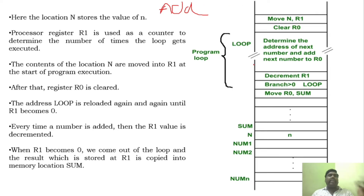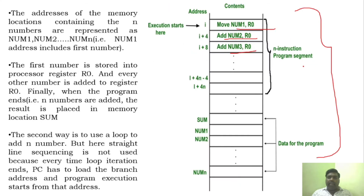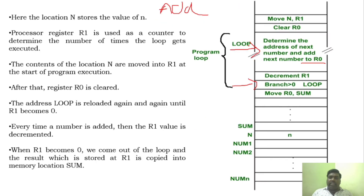Loop — where do you start, how do you start? You will add it and branch. This is the branch and this is the loop. A loop is nothing but determining the next address. I have to perform the same instruction here, so what I am going to do is find out the next address and add it in R0.